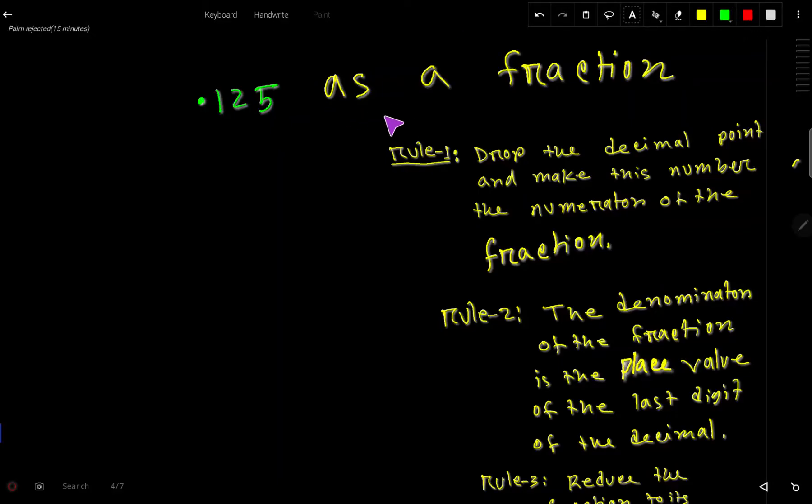Let's look at converting a decimal as a fraction. We have 0.125 as a fraction. This is a decimal number and we would like to convert this decimal to fraction. To convert decimal as a fraction, you have to go through three steps.